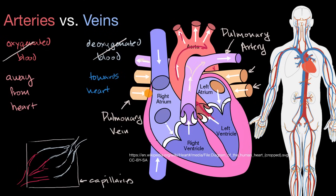Then the cycle starts again. The pulmonary veins bring oxygenated blood into the left atrium, then the left ventricle, which pumps it to the rest of the body through the aorta for systemic circulation. You have your pulmonary circulation, which circulates blood to, through, and from the lungs, and your systemic circulation, which takes blood to and from the rest of the body.